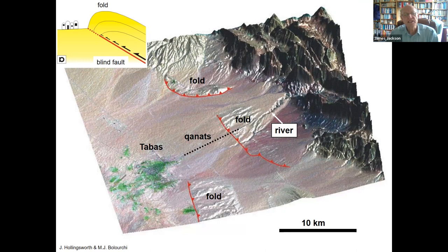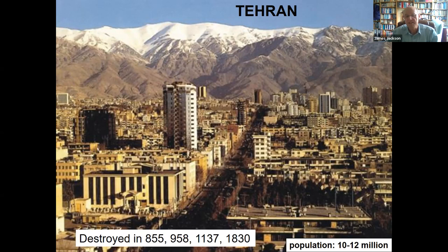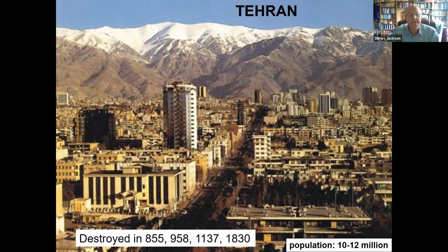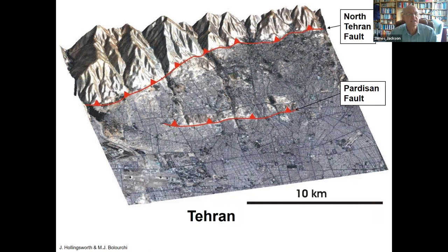These little places like Safida Bay and Tabas eventually become big places. The capital Tehran now has 10 to 12 million people and has been destroyed in earthquakes four times since the coming of Islam to Iran. In those days it was a minor stopover on a trade route, but now it's a major capital city. Looking at a satellite view draped over topography — roughly the size of London — you can see rivers coming out of the mountains cutting down in canyons, ending along a ridge that is a fold, showing exactly where the faults are: the Pushan Fault in the middle and the North Tehran Fault along the mountain edges.